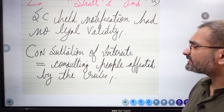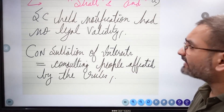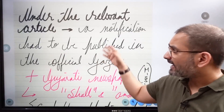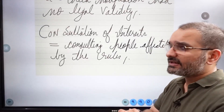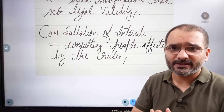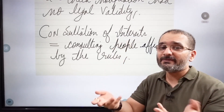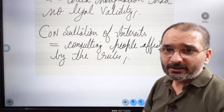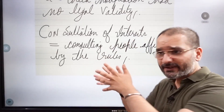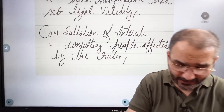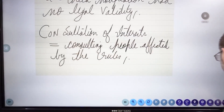Now, consultation of interests. This is for your knowledge: consulting people affected by the rules. For example, for agricultural mandi rules, the government tries to take all stakeholders and associations into consultation. At the level of an act, parliament is there to debate. But when the power of legislation has been delegated, the executive can certainly consult people — and that is called consultation of interests.